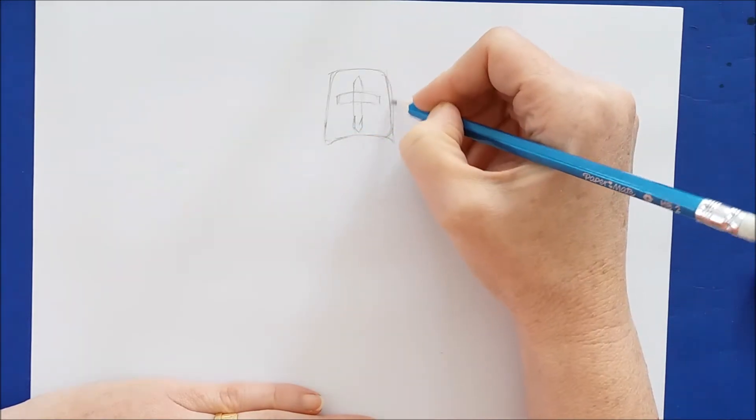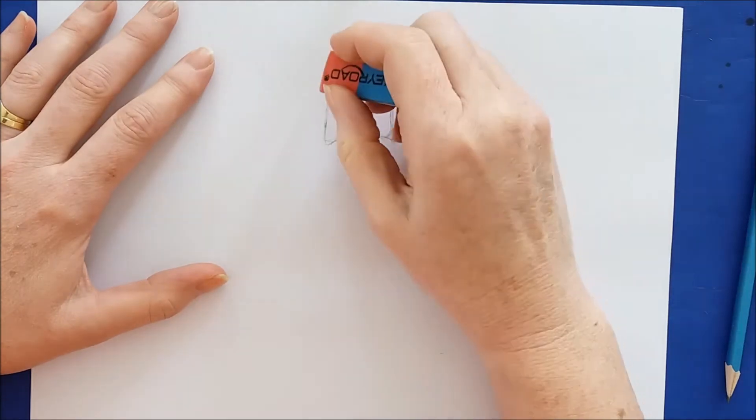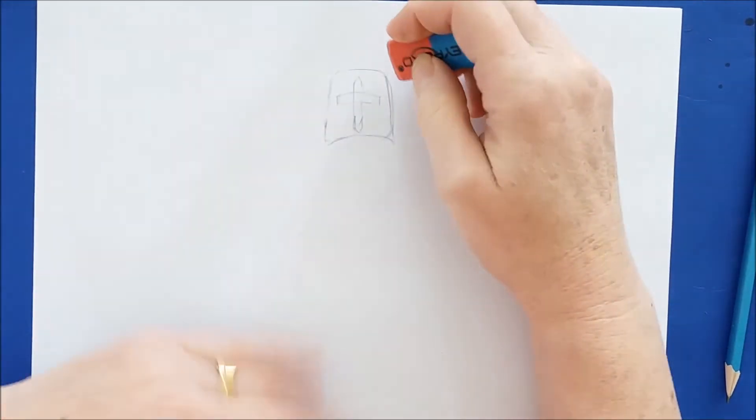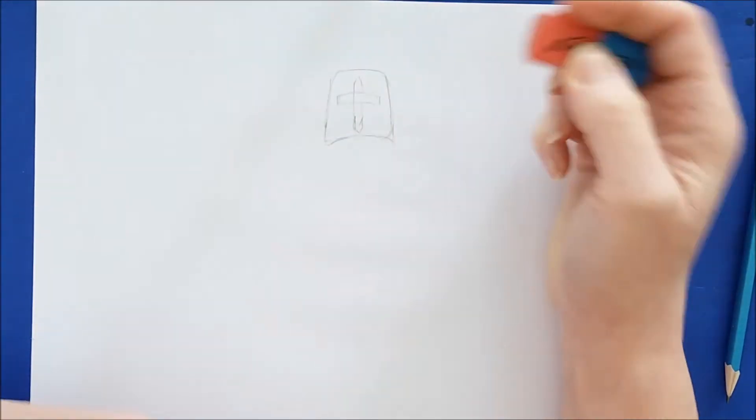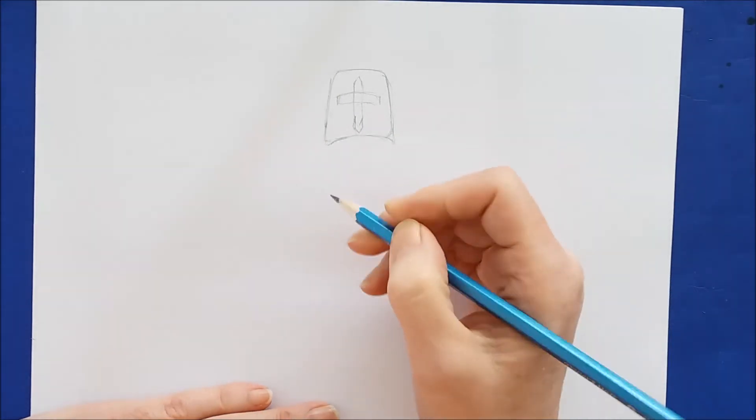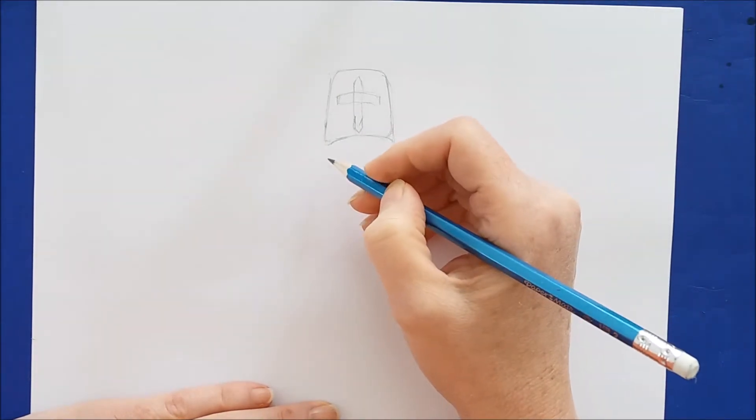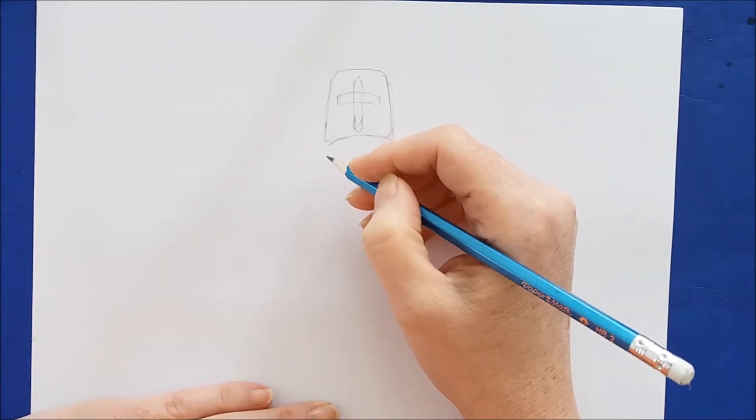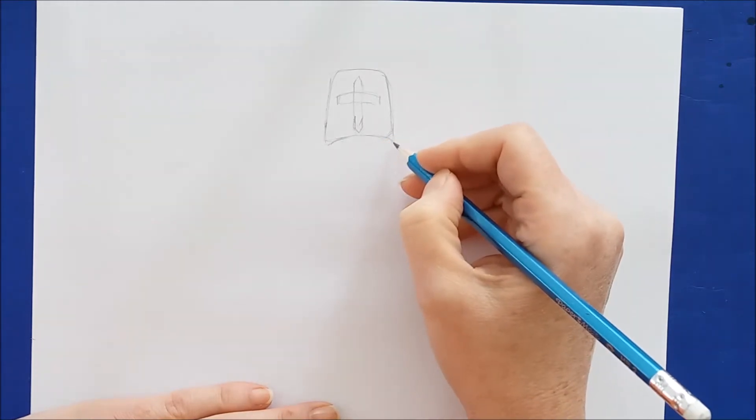So the helmet's just about finished. I just have to erase a few of these lines here, and now I'm going to go ahead and draw the rest of this knight.